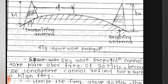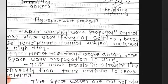The sky wave propagation cannot take place above a frequency of 30 MHz. This is the sky wave propagation we have seen in the previous lecture, which cannot propagate above 30 MHz. Hence, for frequencies above 30 MHz, the space wave propagation is used.